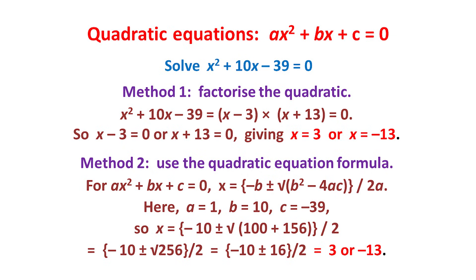Let's now move on to quadratic equations, those with an x-squared term. The two most familiar ways of solving these, which we learn at school, are both shown here. We'll illustrate them with the specific equation x squared plus 10x minus 39 equals 0. The first method is to factorise it. The clue is the 39, which is 3 times 13, giving us the factorisation x squared plus 10x minus 39 equals (x minus 3)(x plus 13). Since their product is 0, either x minus 3 or x plus 13 must be 0 — that is, x is 3 or minus 13.